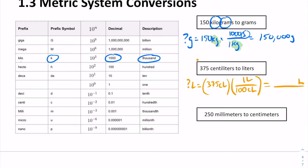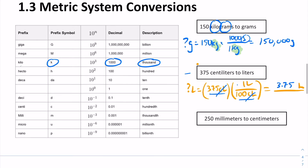Let's try the next one on your own — convert 175 centiliters to liters. The answer is 1.75 liters. Why? There are 100 centiliters in 1 liter. We write our conversion factor, centiliters cancel, and we're left with the answer in liters.